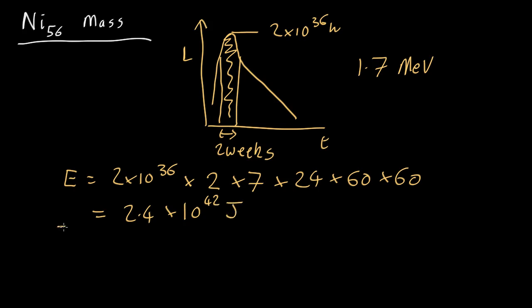Okay, so that's the amount of energy we're seeing liberated by the nickel going to cobalt. How many atoms of nickel-56 do you need to do that? Well, each atom will liberate 1.7 mega electron volts, so the energy per atom equals 1.7 by 10 to the 6.